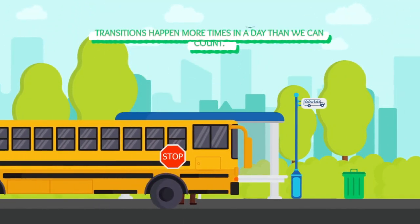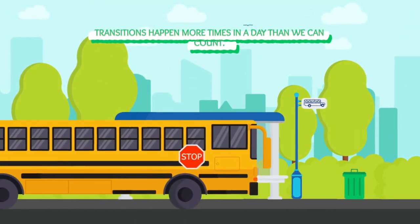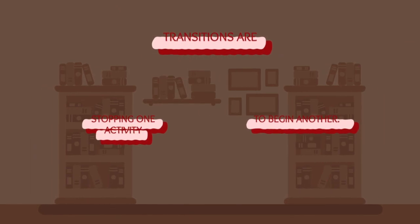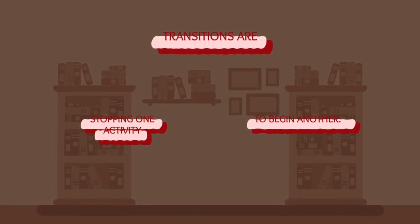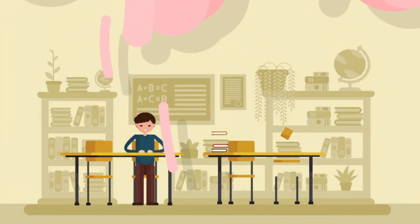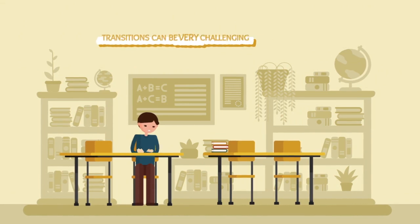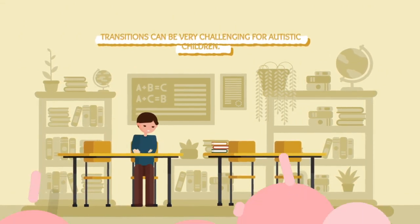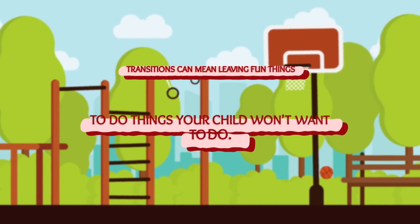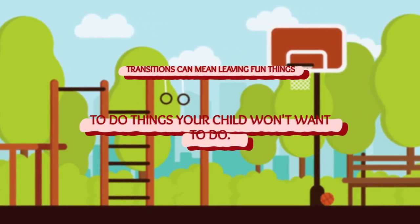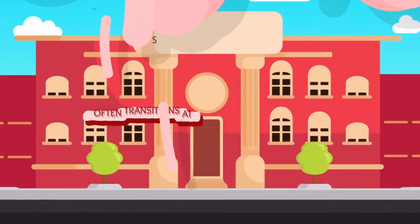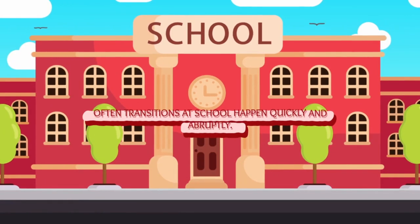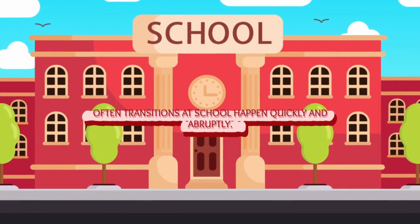Transitions happen more times in a day than we can count. Transitions are stopping one activity to begin another. Transitions can be very challenging for autistic children. Transitions can mean leaving fun things to do things your child won't want to do. Often, transitions at school happen quickly and abruptly.